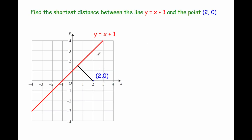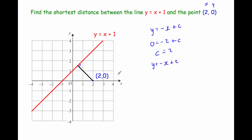So here we've got the same question and we're just going to follow the steps. Step one: find the equation of the perpendicular line. The equation of the line we're given is y equals x plus 1, so the gradient is 1. A perpendicular line will have the negative reciprocal gradient, which is minus 1, so y equals minus x plus c. We know it passes through the point (2, 0), so substituting in: 0 equals minus 2 plus c, giving c equals 2. So the equation of the black line is y equals minus x plus 2.